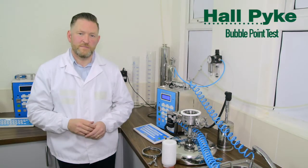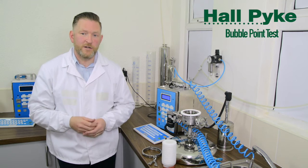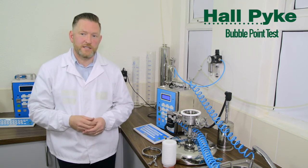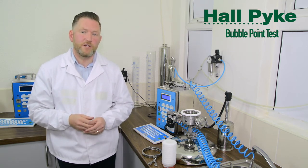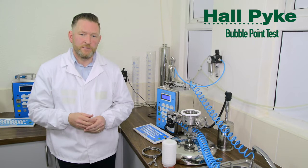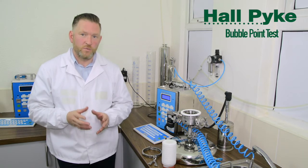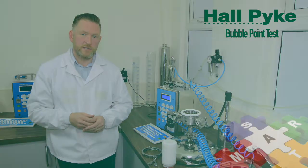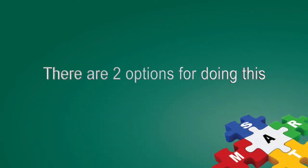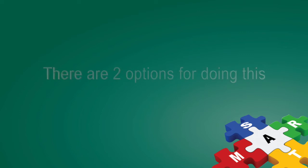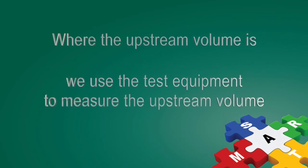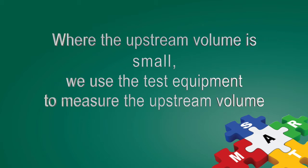Upstream volume. In the case of a WIT or diffusive flow test, we would also need to establish the upstream volume, but this is something that we have to do ourselves. There are two options for doing this. Where the upstream volume is small, we use the test equipment to measure the upstream volume.